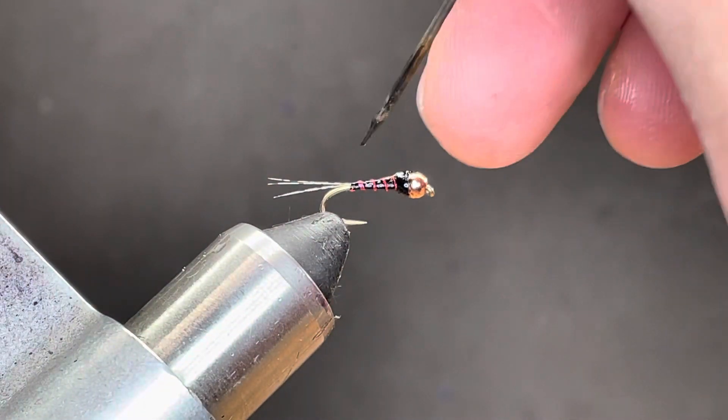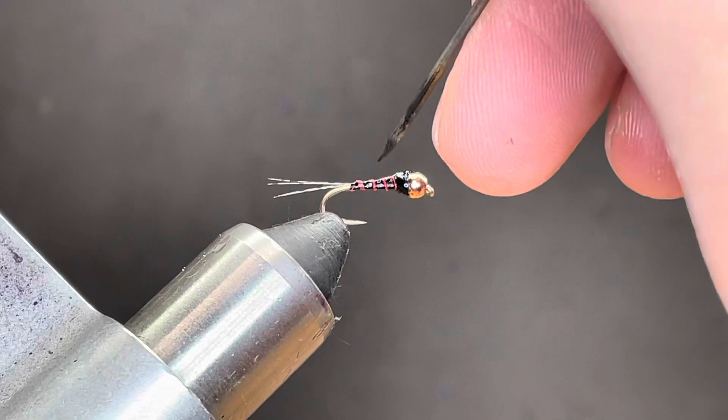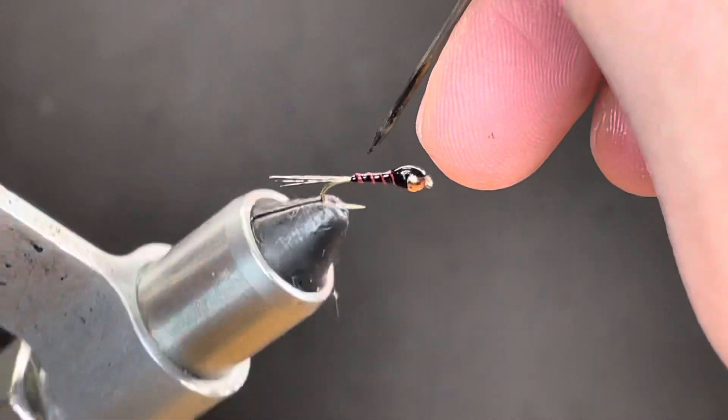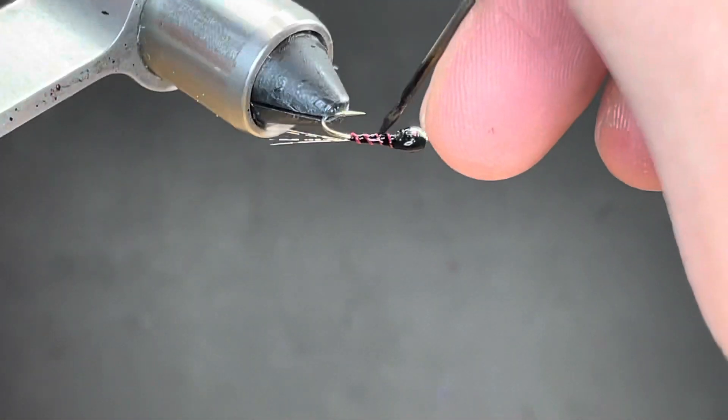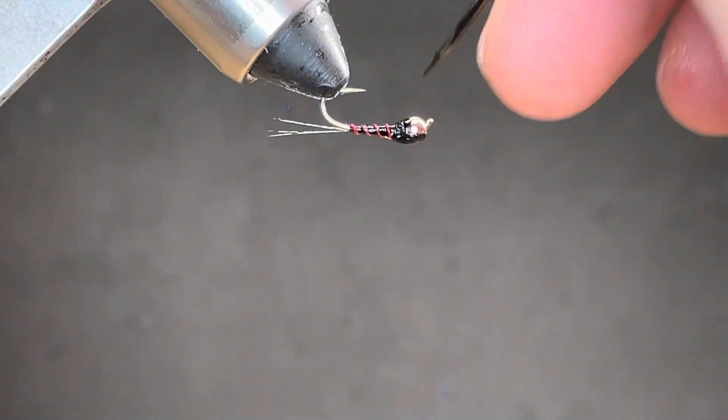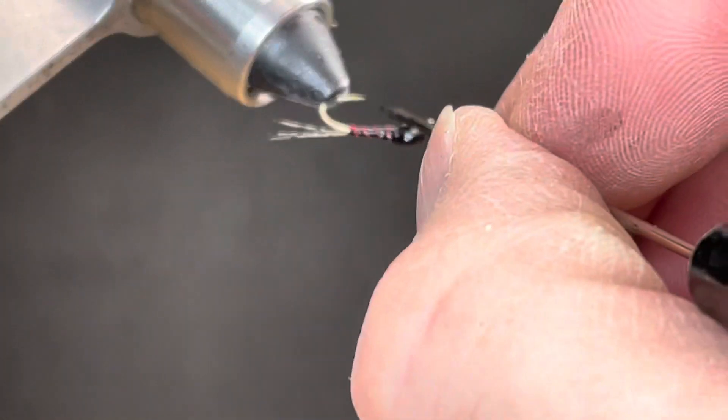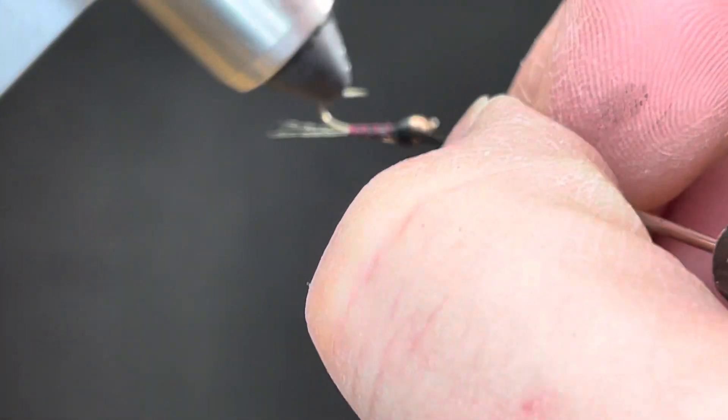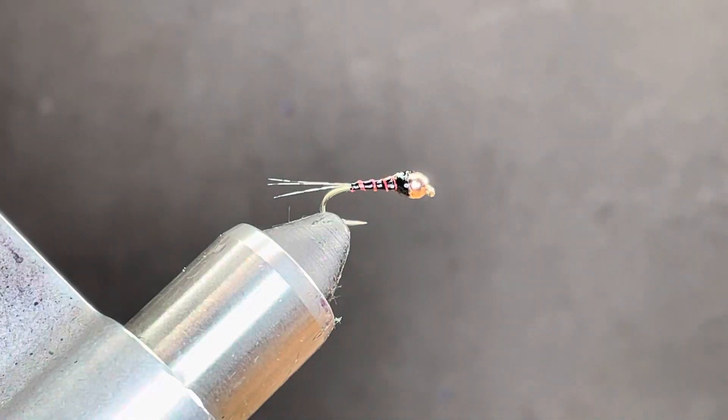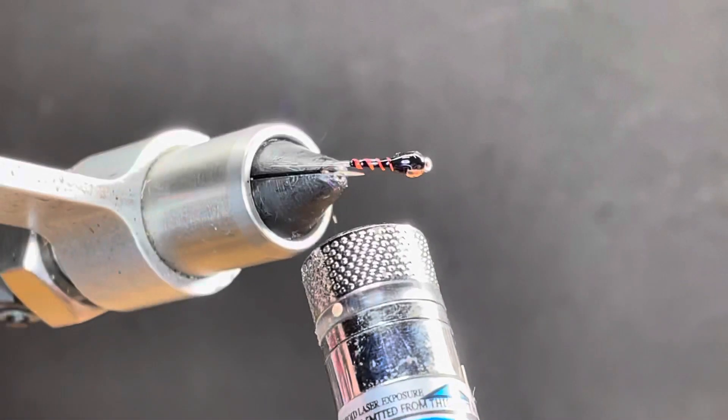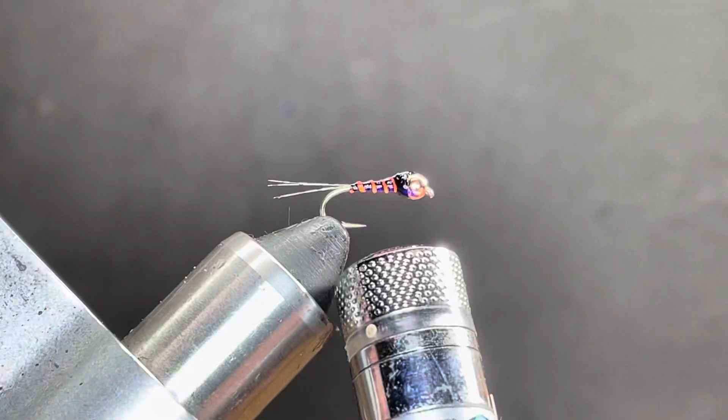So between the ribs, if you want the ribs exposed, you can run your bodkin between the ribs. Kind of like if you had like a little tiny paint brush and you were just kind of painting with it. Just like that. And that's it.